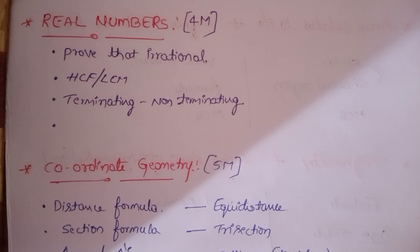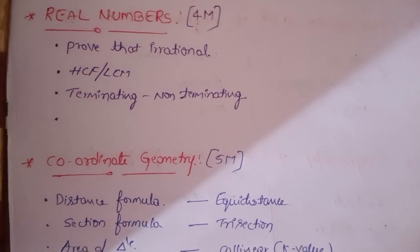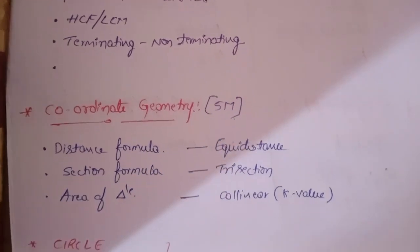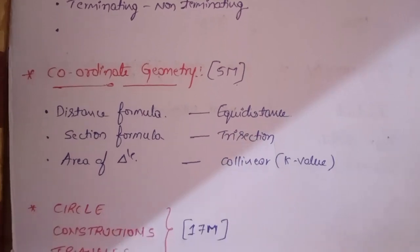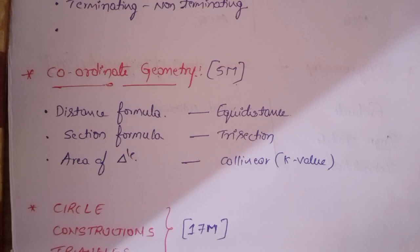Next, coordinate geometry has two types: one is easiest direct questions and some application questions. For example, distance formula - direct questions give direct distance formula to simplify. Or application questions like equidistance between two points. Similarly, section formula direct questions or trisections. Area of triangle direct questions or collinear and k values - these types of chances are there.